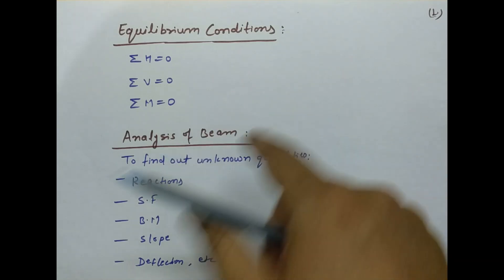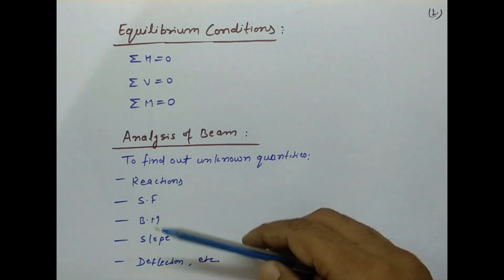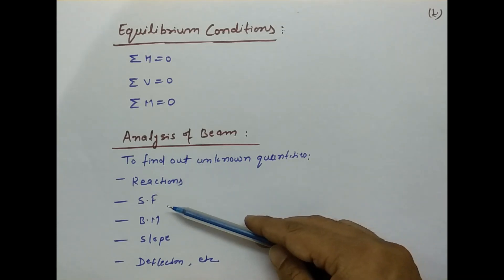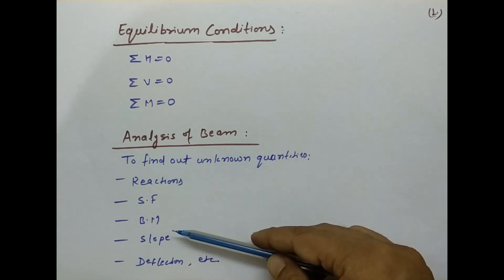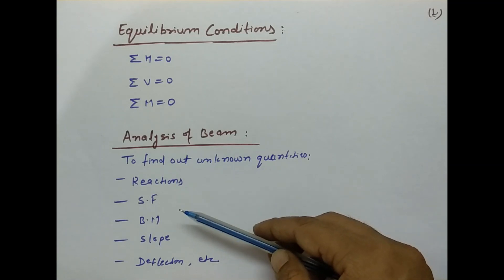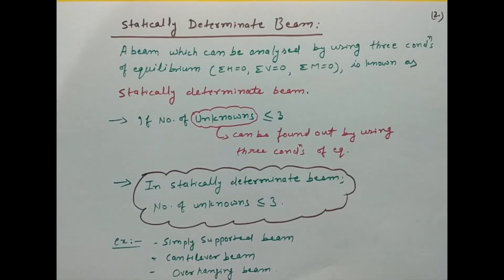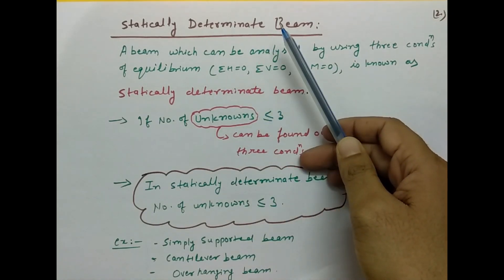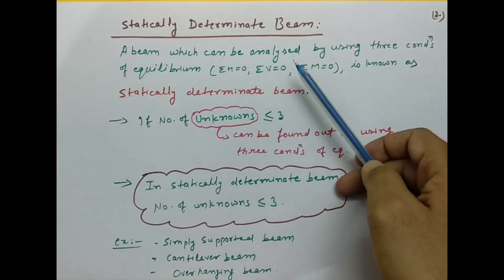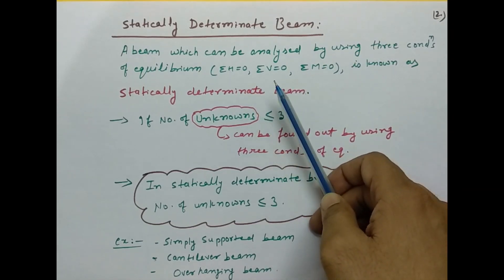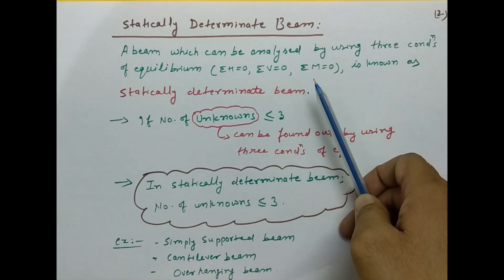अब हम बात करते हैं analysis of beam की। A beam which can be analyzed by using three conditions of equilibrium — that is summation of H = 0, summation of V = 0, summation of M = 0 — then that beam is known as a statically determinate beam.